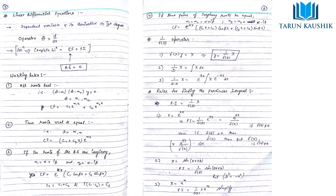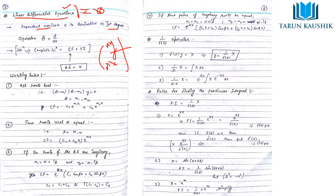For linear differential equations, the dependent variable and its derivatives must be of first degree only. For example, if y is the dependent variable and x is independent, then y and its derivatives y₁, y₂, y₃ should appear only to the first power. The order of differentiation can be anything, but the degree should be one only.